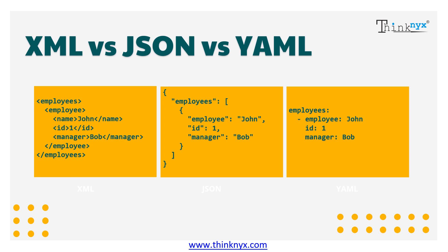YAML is a strict superset of JSON. It can do everything that JSON can do, but apart from these, it can do many more. The major difference between YAML and JSON is that YAML uses newlines and indentations, while JSON uses brackets and braces.